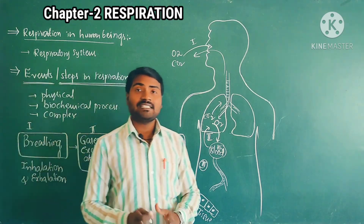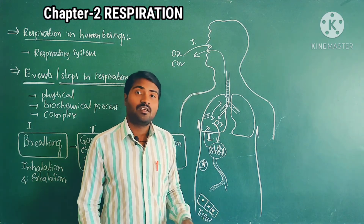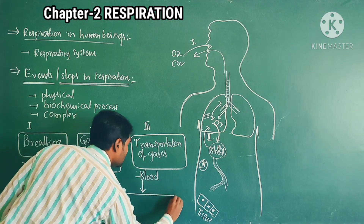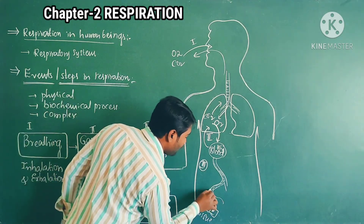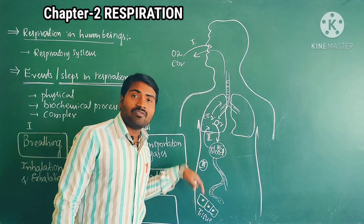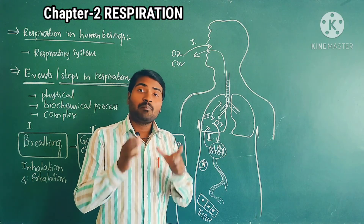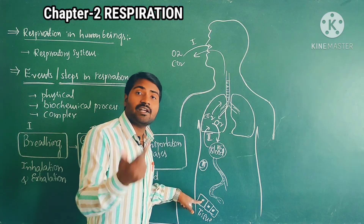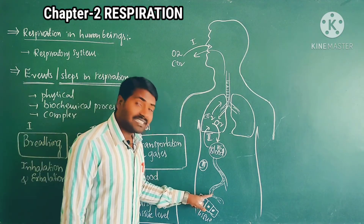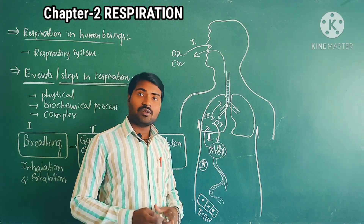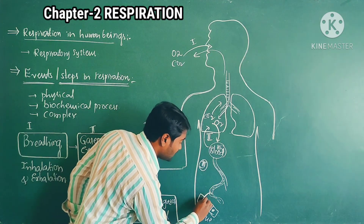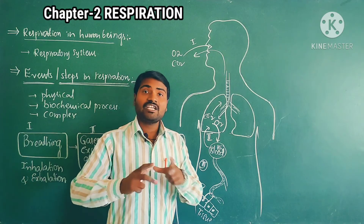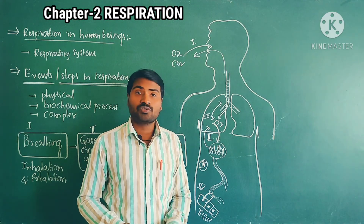What is the next event? Exchange takes place between the blood capillaries and tissues. Blood capillaries cannot penetrate into the tissues directly. So again, exchange of gases takes place between the capillaries and tissues. This is the fourth event — exchange of gases between capillaries and tissues.